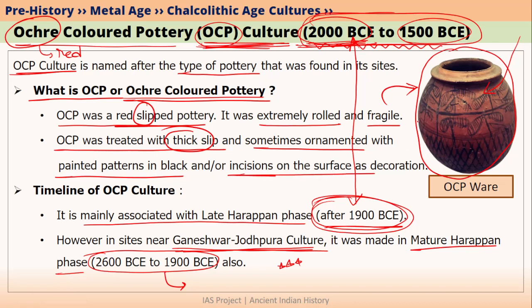Incisions are nothing but cutting a small groove on the pot. If a groove is made on the pot, such a groove is called an incision. Incisions mainly serve as decoration and also for giving grip to the pottery. This is about the OCP or Ochre Coloured Pottery.